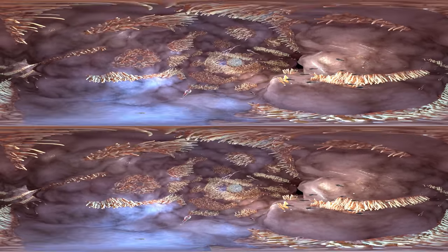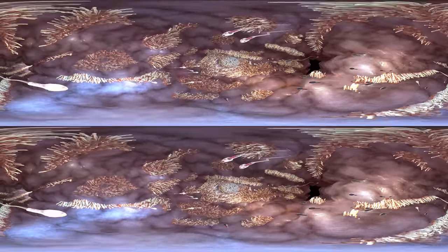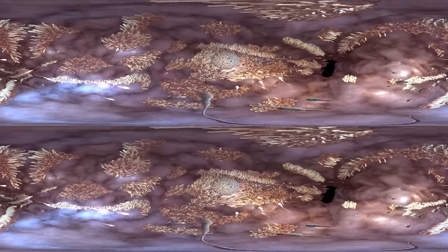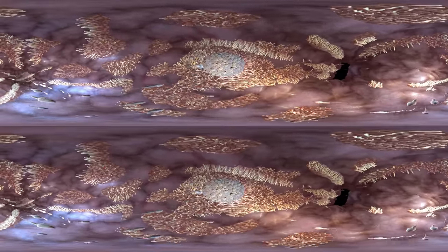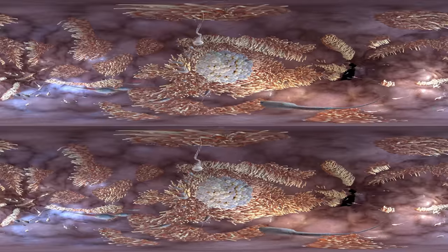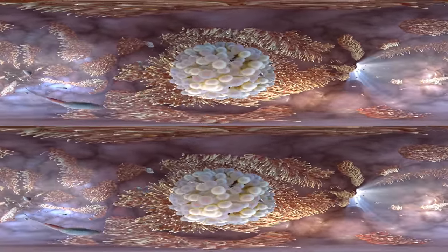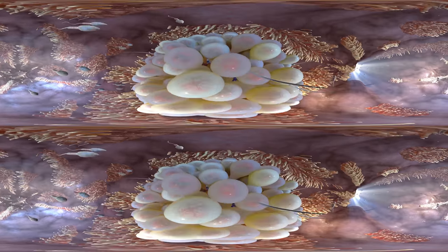The egg cell is covered with a layer, the corona radiata. Sperms must push through it to arrive at the zona pellucida, the outer layer of the egg cell. They attach to specialized receptors which enable them to burrow into the outer egg layer.